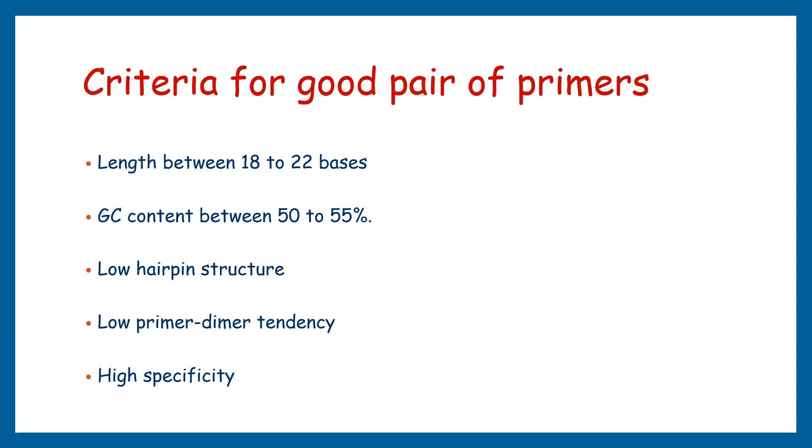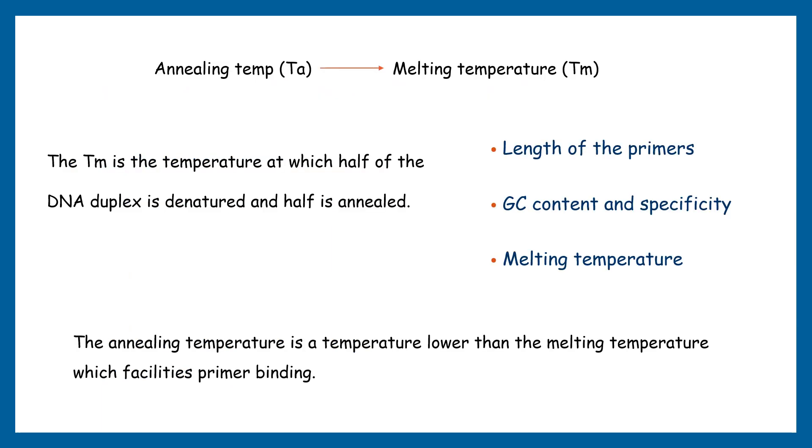The annealing temperature is specific to the primers used in the PCR reaction. Annealing temperature is typically determined based on the melting temperature of the primers. The Tm is the temperature at which half of the DNA duplex is denatured and half is annealed. The Tm is influenced by factors such as the length and composition of the primers.